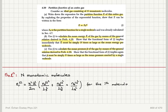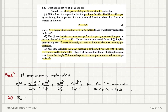The quantum numbers Nx, Ny, Nz can take integer values starting from one all the way up to infinity. Starting with Part A, let's consider the partition function Z0 for one molecule. For one molecule, I can write the partition function as the sum over Nx, Ny, and Nz of the exponential of minus beta times epsilon.